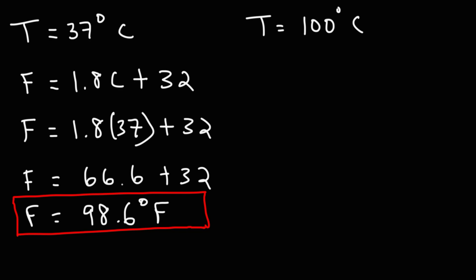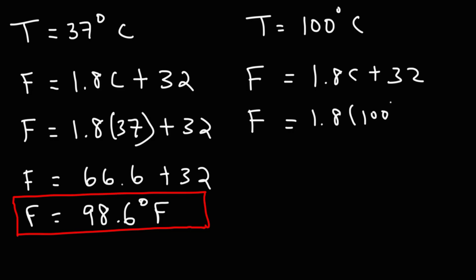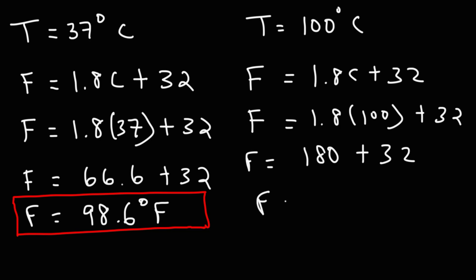Now let's try the other example. Water boils at 100 degrees Celsius — let's calculate the Fahrenheit temperature for that. Using the same formula, let's replace C with 100. 1.8 times 100 is 180. And then 180 plus 32 — if you add 18 and 3 you get 21, and then 0 and 2 you get 2 — so the Fahrenheit temperature is 212 degrees.